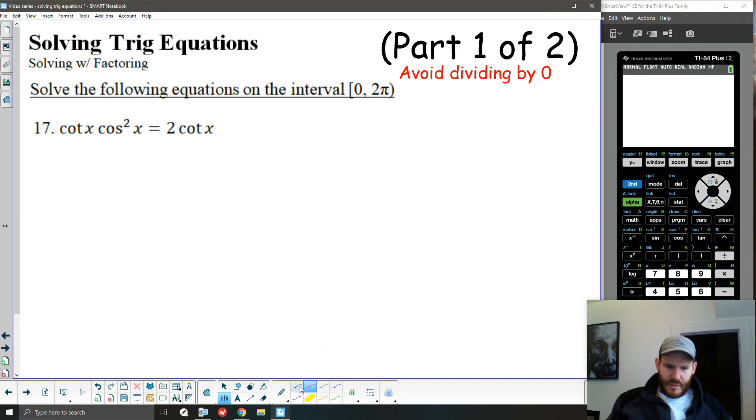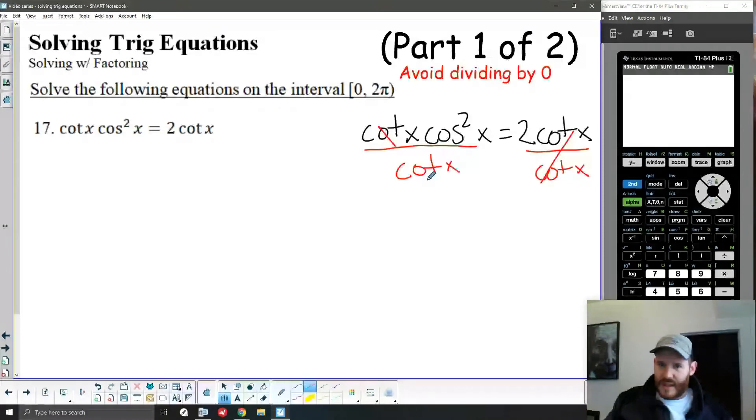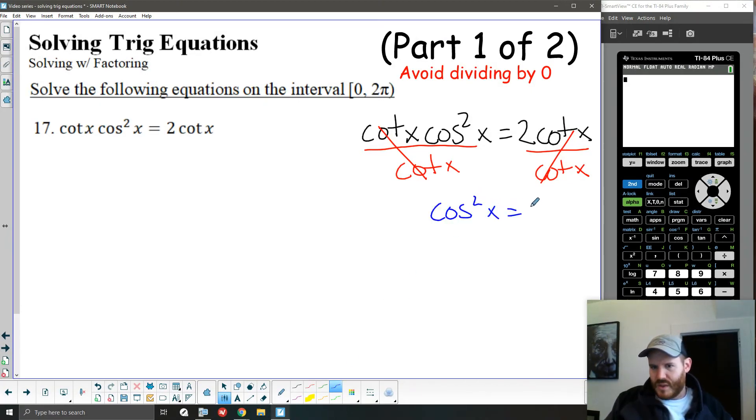So what do I mean by that? Well, I'm going to rewrite this question over here, and I'm going to make that mistake intentionally, and then I'm going to go back and do it correctly on this side. Say I have cotangent of x times cosine squared x is equal to 2 cotangent of x. And what I'm going to do is divide both sides by cotangent of x, and this is where my problem is going to come in. So if I do that, I get cancellation here, and I wind up with cosine squared x equals 2.